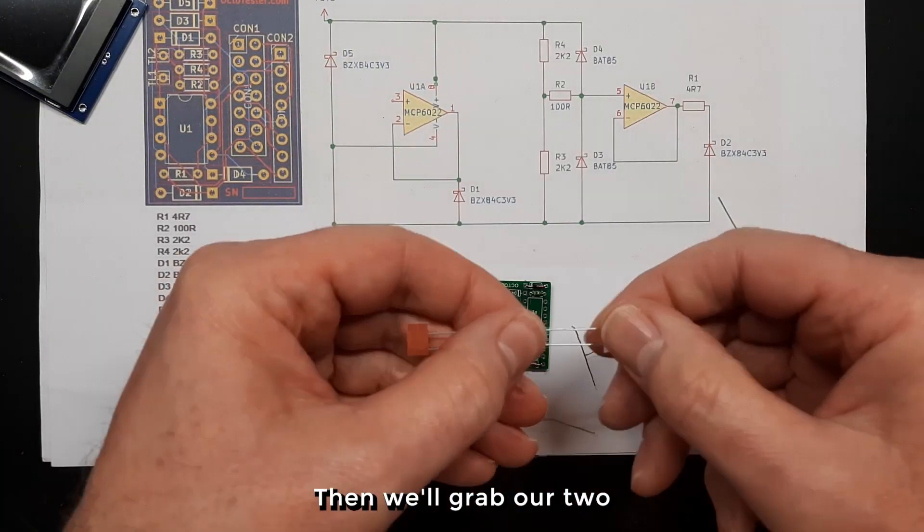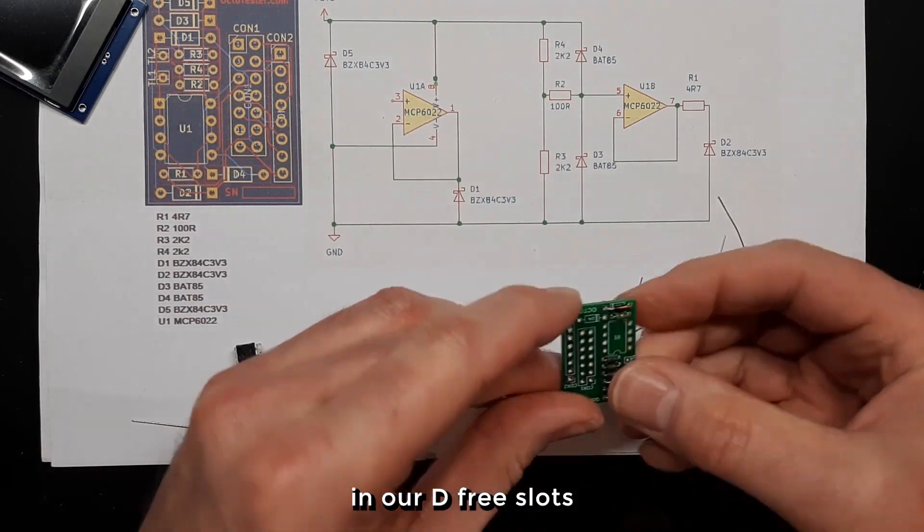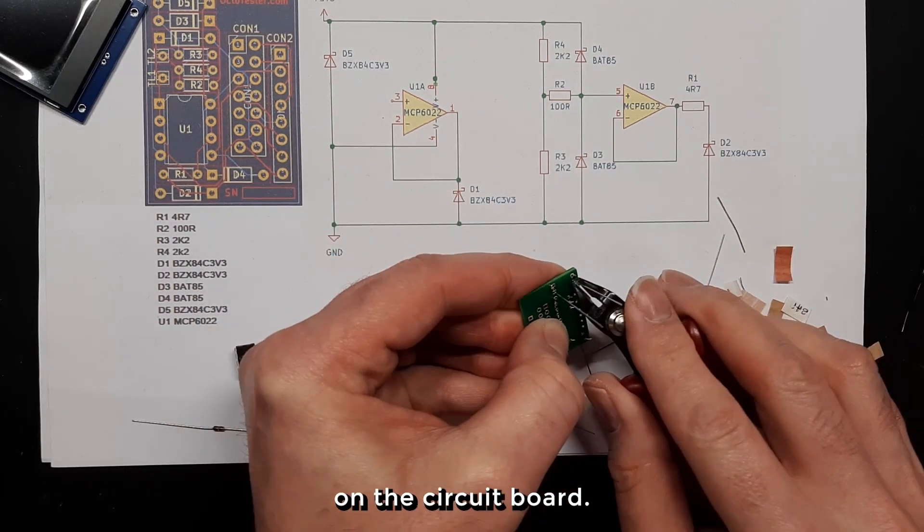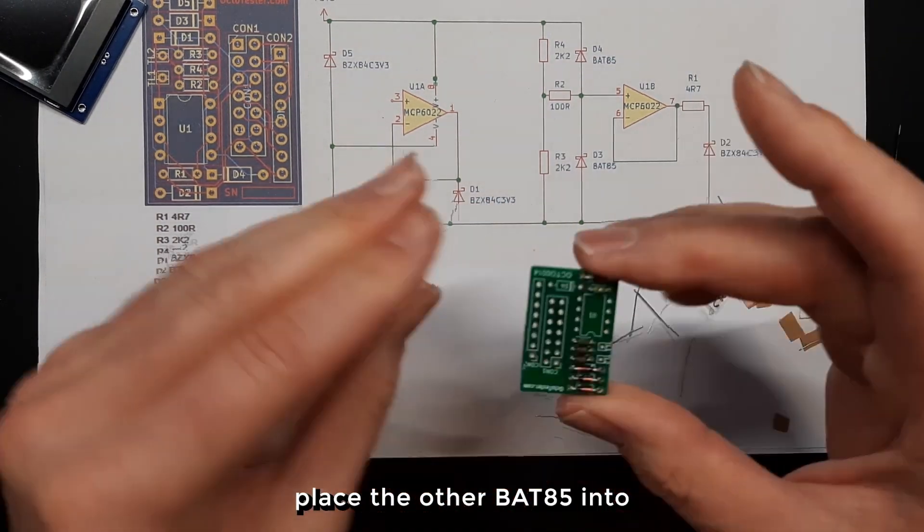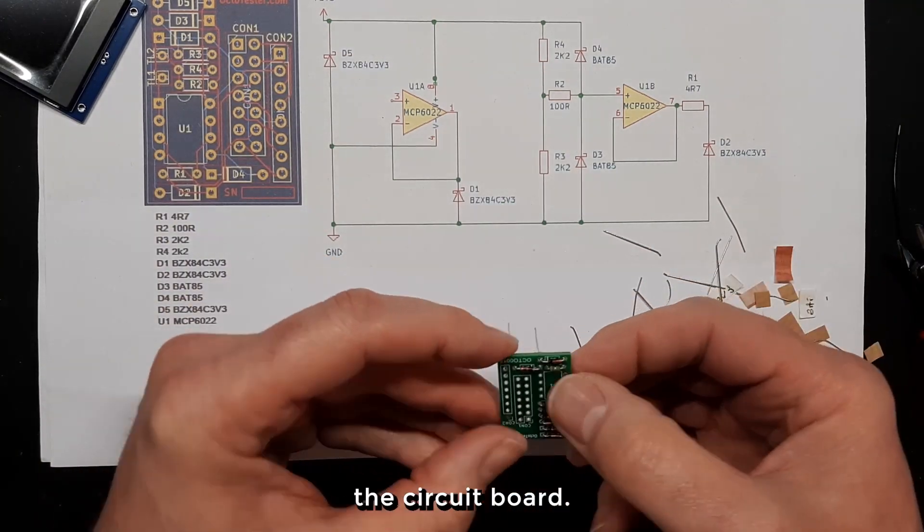Then we'll grab our two BZX85 diodes and we'll place one of these in our D3 slot on the circuit board, and we'll place the other BZX85 into D4 position on the circuit board.